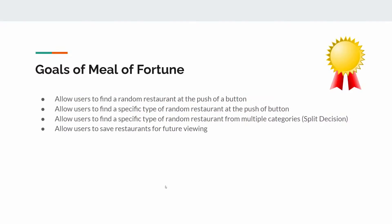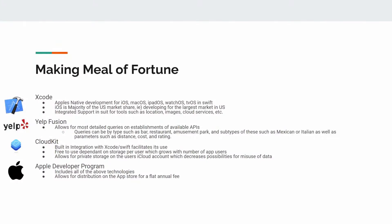Some of the tools we used for development include Xcode. We used it because it's Apple's native development environment, so we can easily run it on our computers with a good simulator for testing. iOS also represents the majority of the US market, so we wanted to develop for it so we and our friends could use it. It has an integrated suite of tools which allows us to do things such as geolocation, show maps, and access cloud services. We also use the Yelp API because it allows very specific queries — we can query for specific types of food, check if places are closed, what the cost is, as well as other things such as shopping and amusement parks.